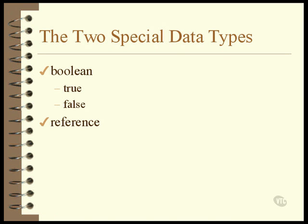There is one last data type, though you could argue it's not truly one of Java's data types. All it can do is hold the address of an object. You can't set its value to an object of the incorrect type. All you can do is set its value to null or to the address of an appropriate type of object, and then use it to refer to that object.